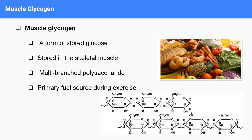Muscle glycogen is a stored form of glucose in our body that we get from consuming carbs. It is stored within the skeletal muscle throughout our body and is a multi-branch polysaccharide. It is our body's first and primary fuel source during exercise, which is then followed by liver glycogen and blood glucose.